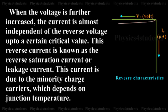When the voltage is further increased, the current is almost independent of the reverse voltage up to a certain critical value. This reverse current is known as the reverse saturation current or leakage current. This current is due to the minority charge carriers which depends on junction temperature.